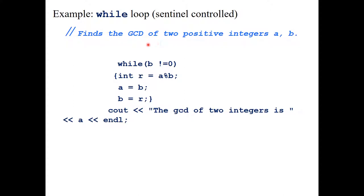You can also find the greatest common divisor of two positive integers A and B using a while loop. While B != 0, compute remainder R = A % B, then assign A = B and B = R, and repeat. When B becomes zero, the loop exits and A holds the GCD. You should run this program with several examples to verify it works correctly — that is your assignment for today.